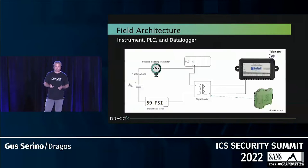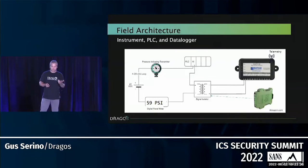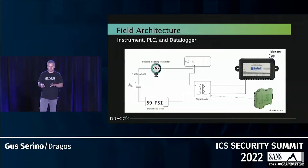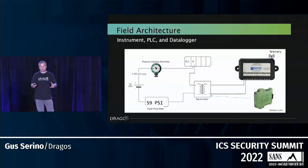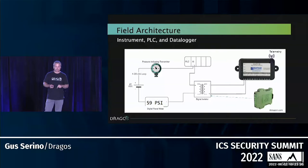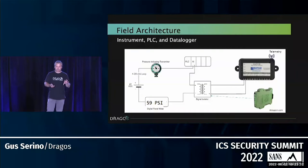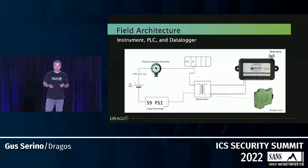We were fortunate we had a lot of this infrastructure already in place. On the field side, the traditional 4–20 mA loop has a 24V DC power supply sending current through the pressure transmitter up to the PLC, through a signal isolator, through a digital panel meter for local indication, and back to the power supply. The signal isolator — that green device on the lower right — takes a copy of the 4–20 mA signal and sends it to the data logger via its own separate telemetry, which could be cellular, plain old telephone line, or whatever is available.